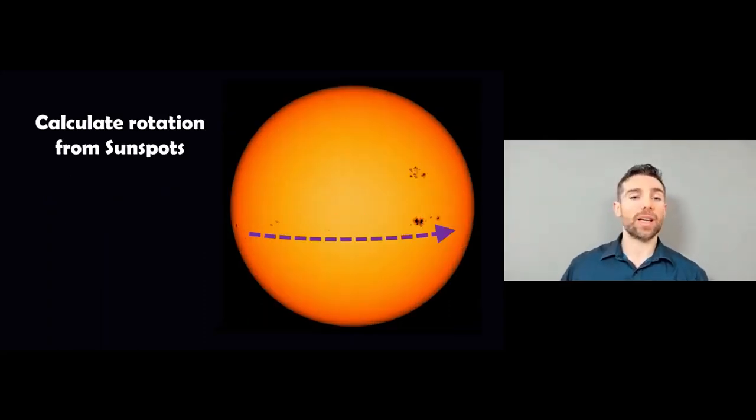We can also use the sunspots on the surface to measure the rotation. This is something you can actually do at home if you've got a telescope with a solar filter and you can see the sun and sunspots. You can actually determine the rotation rate of the sun by monitoring how fast they move across the surface.